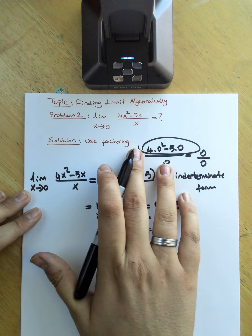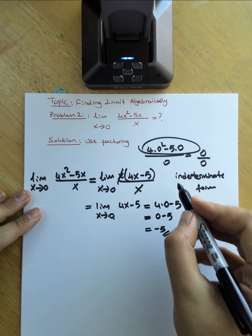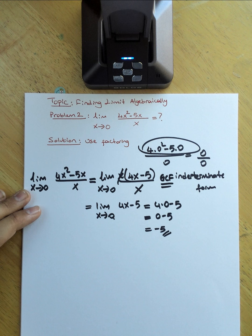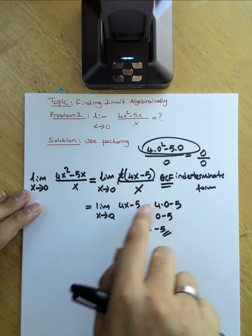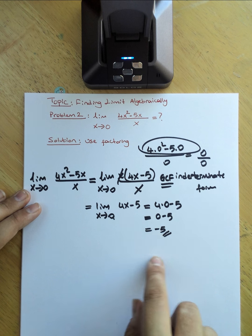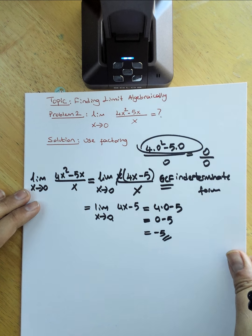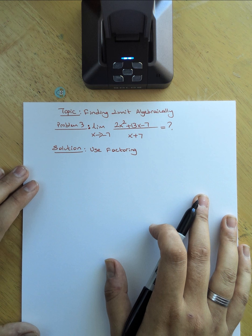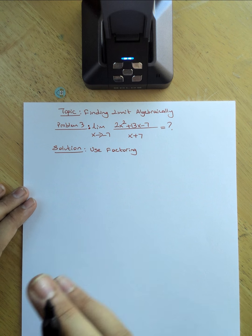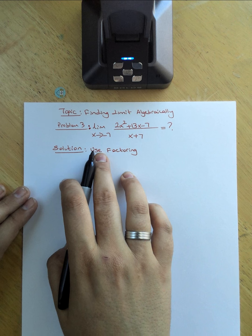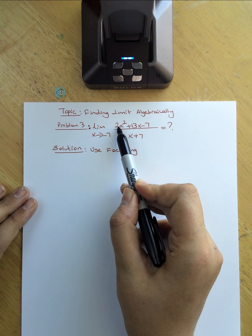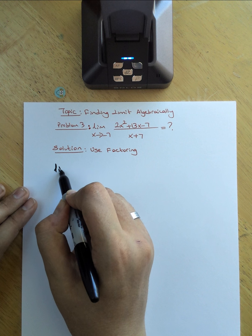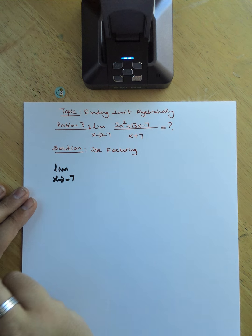Again, we used factoring — specifically the greatest common factor method — to handle this rational expression, giving us the limit as negative 5. Now let's move on to the third problem. Our limit is limit x approaches negative 7 of 2x squared plus 13x minus 7 over x plus 7.